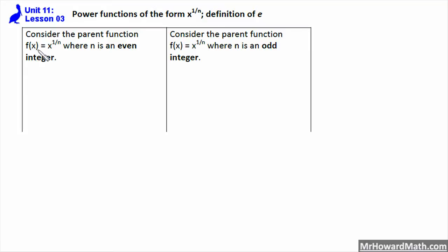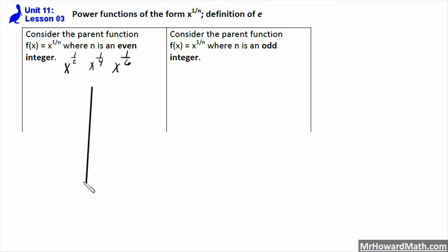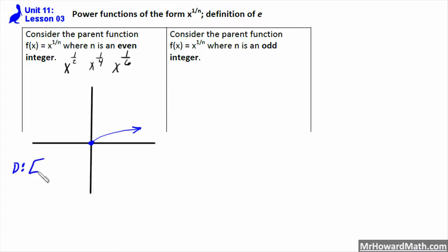There are two different types. Consider the parent function f of x equals x to the 1 over n where n is even — so x to the 1 half, x to the 1 fourth, x to the 1 sixth. Anytime the denominator is even, they all have the same basic shape as the square root function. Remember, x to the 1 half is the exact same thing as the square root of x. Their domain is always 0 to infinity, and the range is also 0 to infinity.